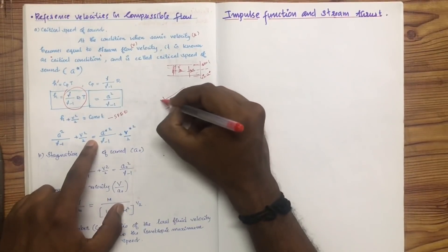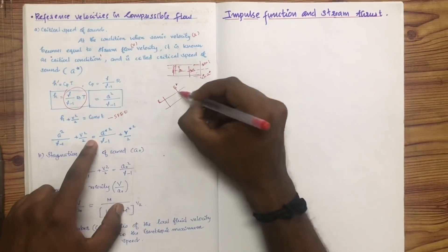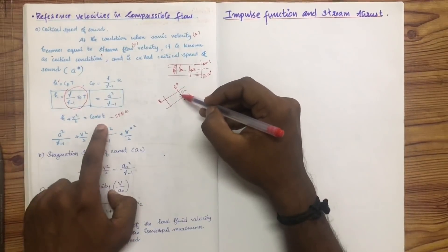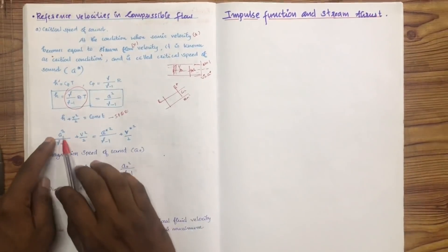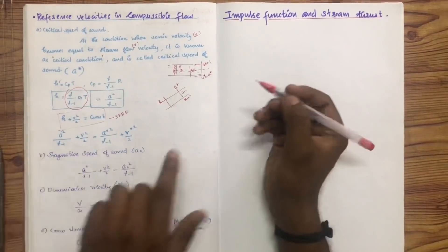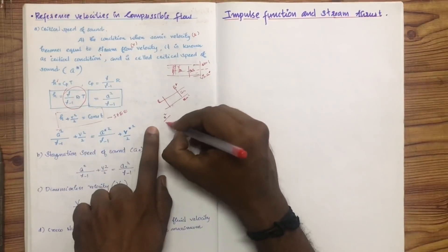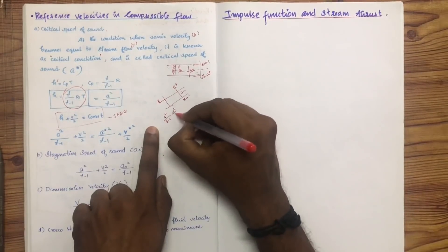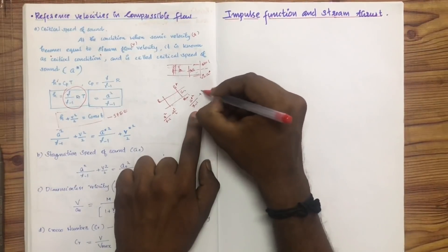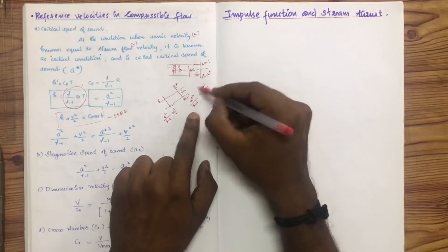We now have two points. At a general point the enthalpy is h; at the critical condition (Mach number = 1) the enthalpy is h-star. Applying the steady flow energy equation: a squared by gamma minus 1 plus V squared by 2 equals a-star squared by gamma minus 1 plus a-star squared by 2. Since V squared equals A squared at the critical condition, A-star can be found from this equation.